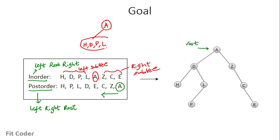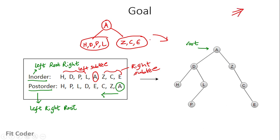So A will be the root node, the left part HTPL will be in the left subtree, and the right part Z, C, and E will be in the right subtree. This recursive method I have already explained in my previous video — if you have any doubts, you can refer to the video in the top right corner. Now the focus here is on the iterative method.